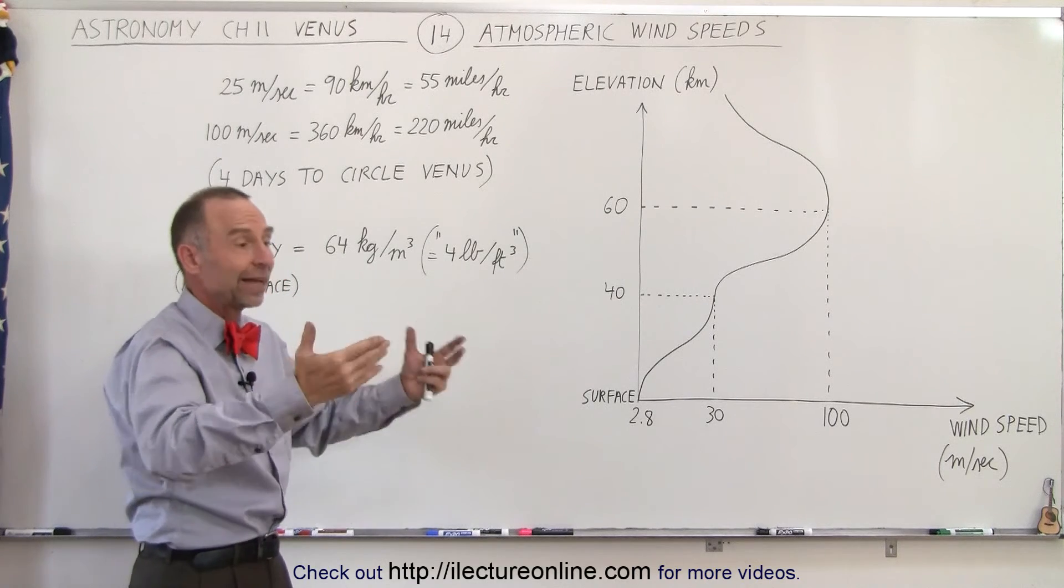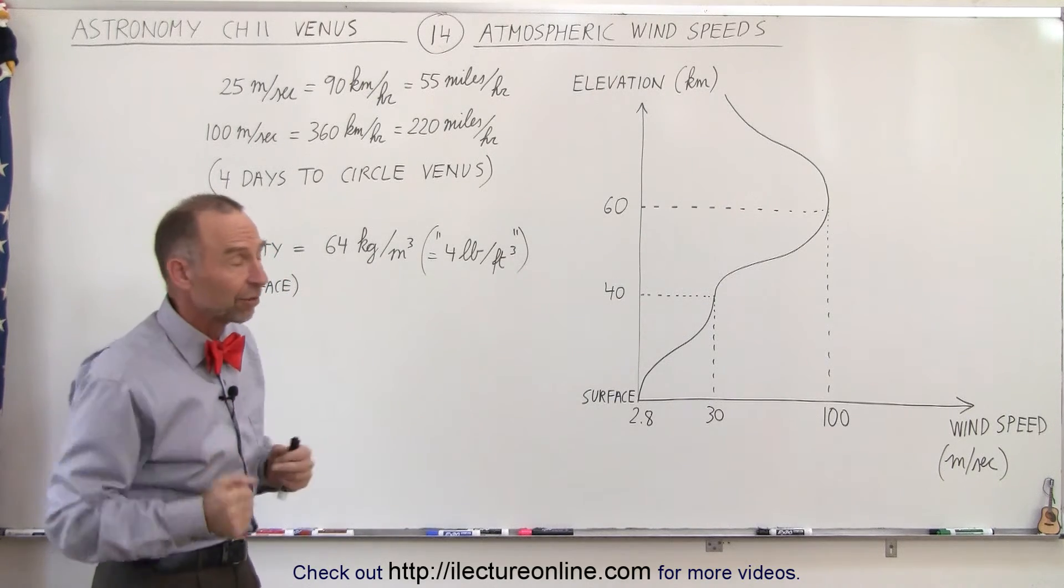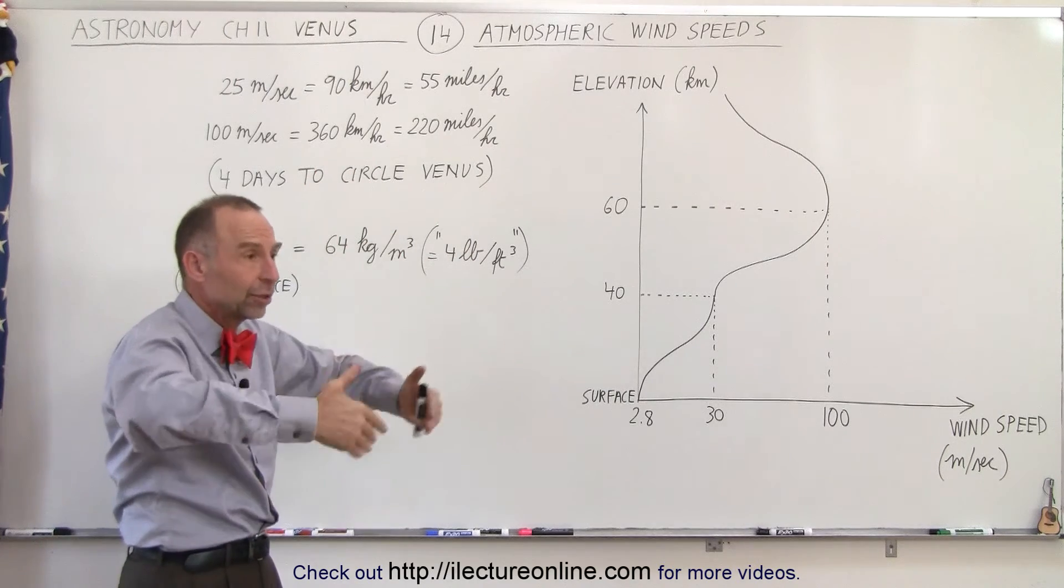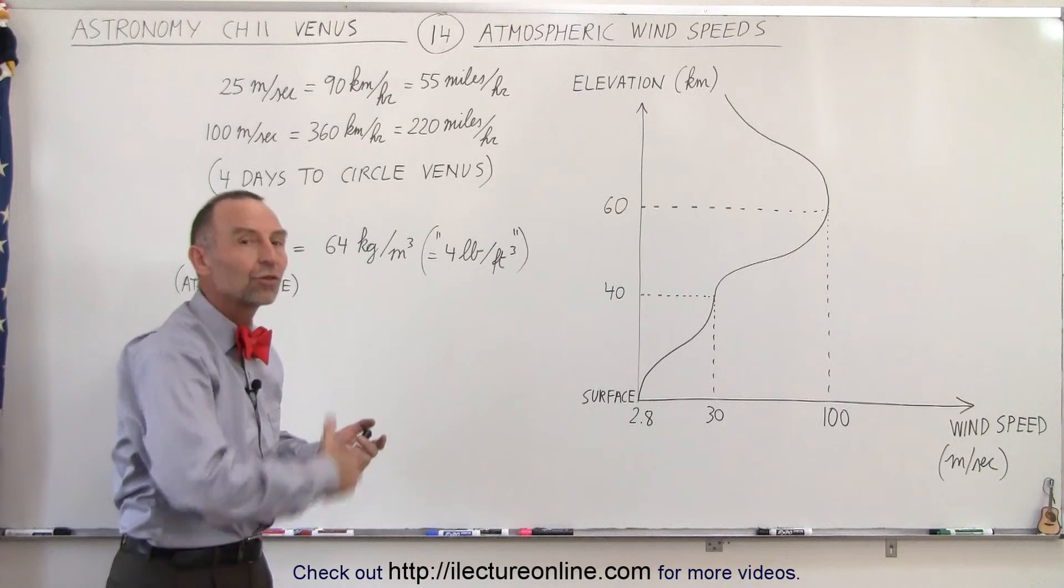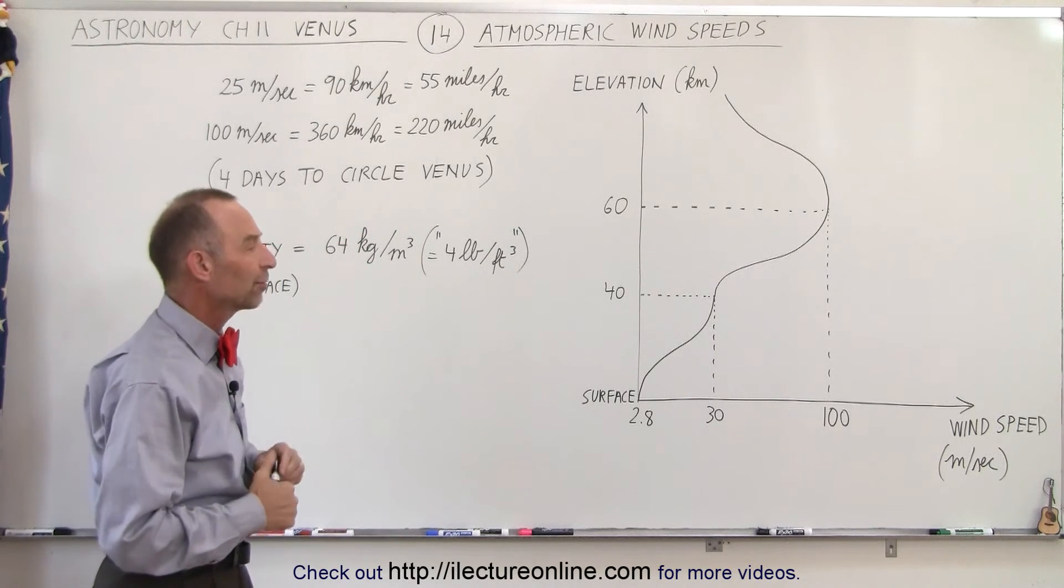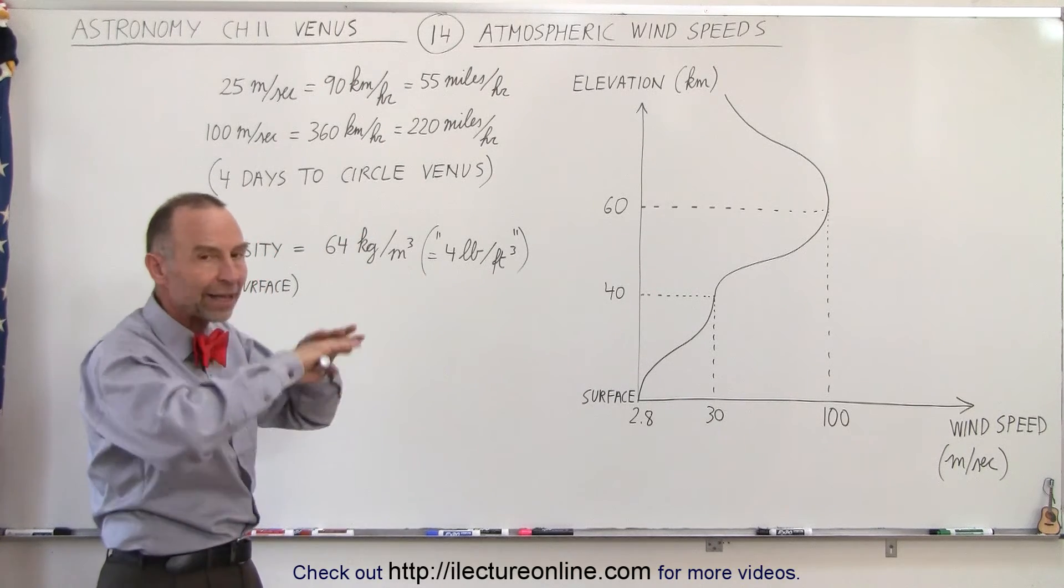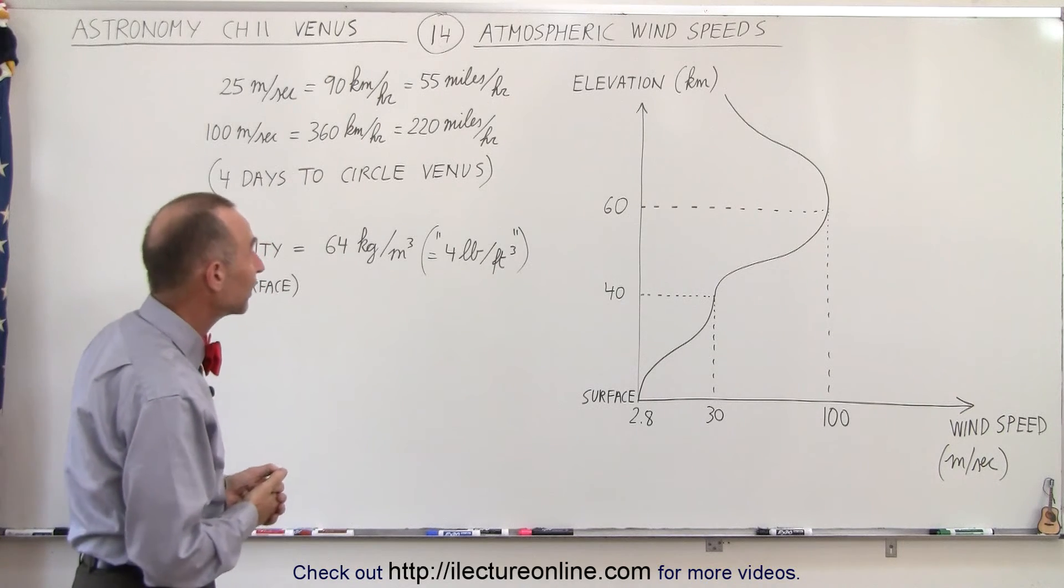And so, for example, if it was nighttime for a hundred, two hundred days like it is on Venus, then the atmosphere would certainly cool down over time. It doesn't get a chance to do that because of the circulation of the atmosphere at these very high speeds. So that's part of the reason why it's about the same temperature all the way around the planet.